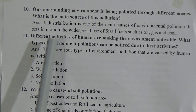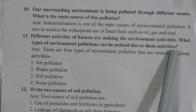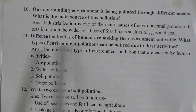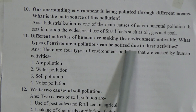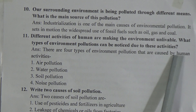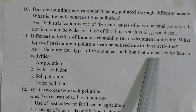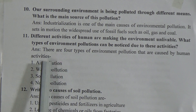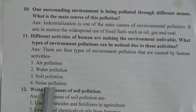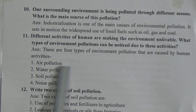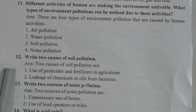Short question number 11: Different activities of humans are making the environment unlivable. What types of environmental pollution can be noticed due to these activities? There are four types of environmental pollution caused by human activities: air pollution, water pollution, soil pollution, and noise pollution.